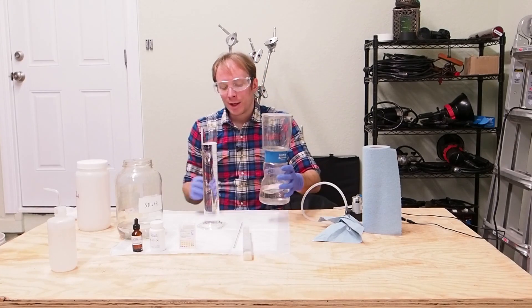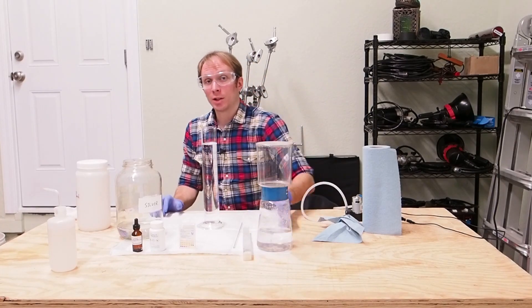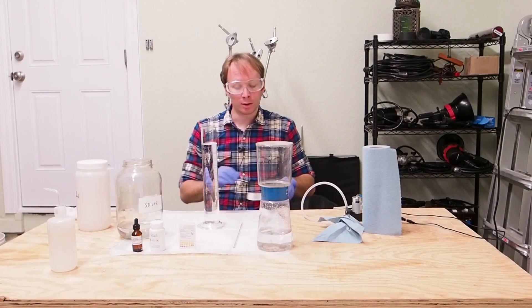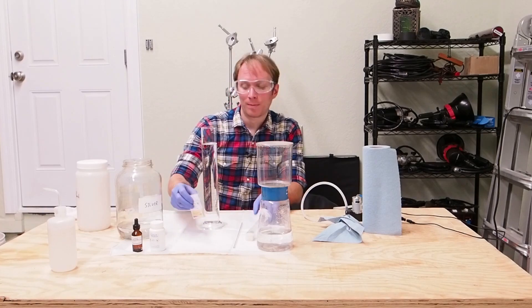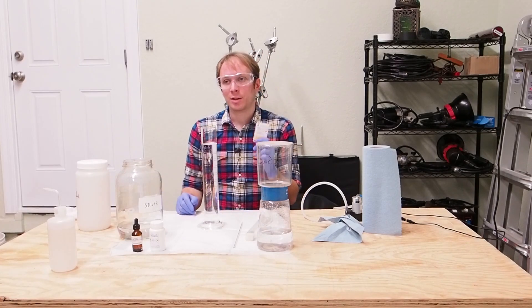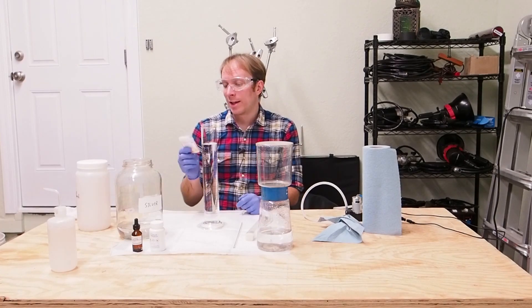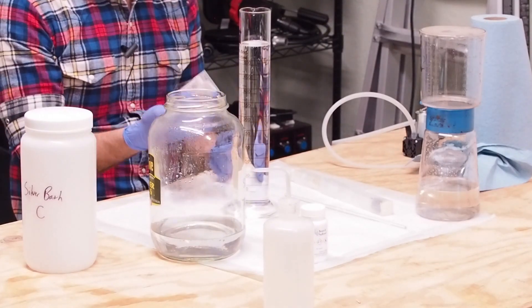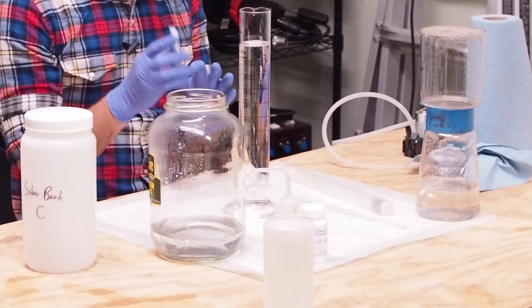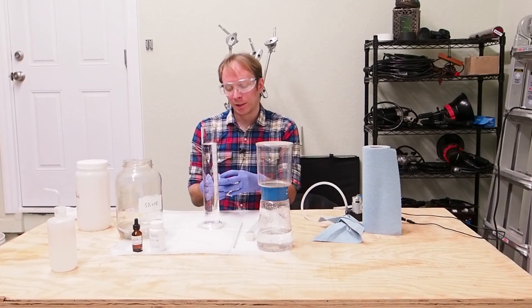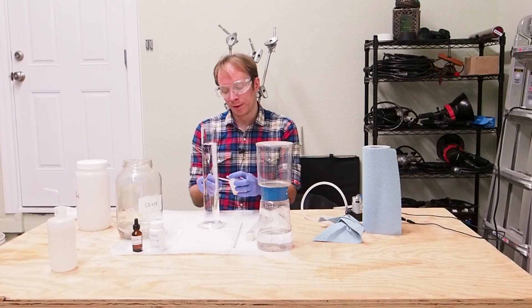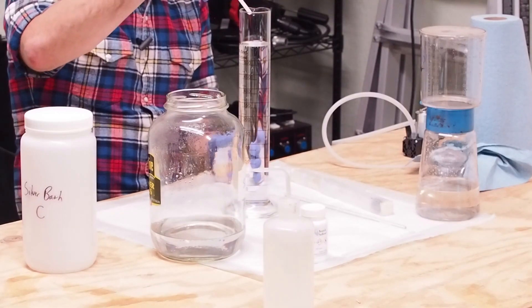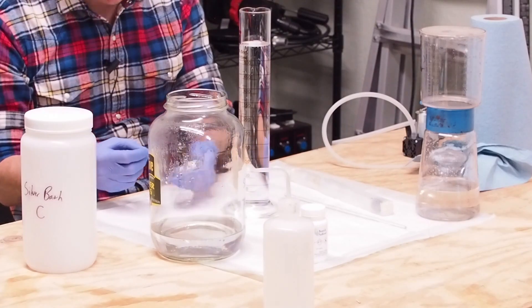Now, there are two things that we need to check and potentially modify about our silver bath. The first thing we're going to look at is the pH. We test the pH using pH strips. You're going to want to get some good pH strips. These are the type that actually have multiple squares on each strip, which help you to get a more accurate reading. I'm just going to pull one of these strips out, dip it in the silver bath, and check it against the guide on the package here.